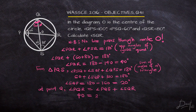From there, we can easily solve for what we are asked — SQR. SQR is going to give us 40 minus 20, and that is 20 degrees, the solution to the question.